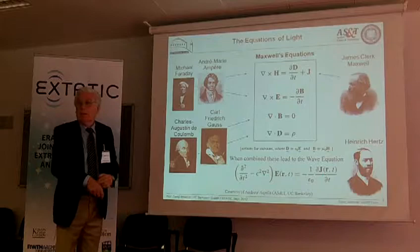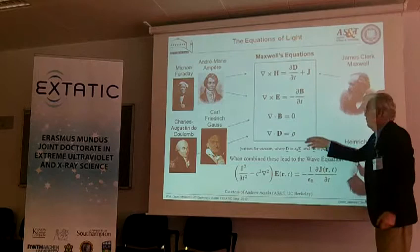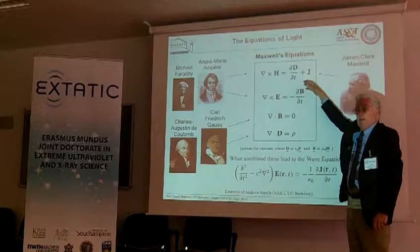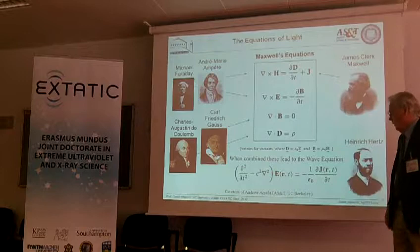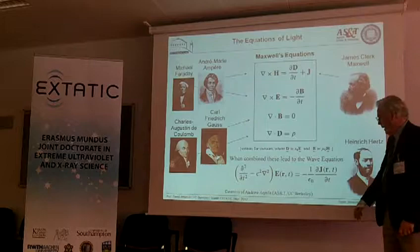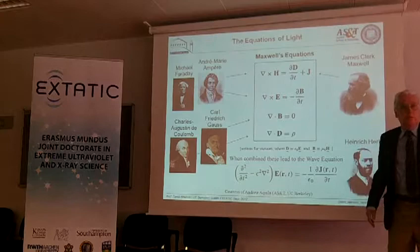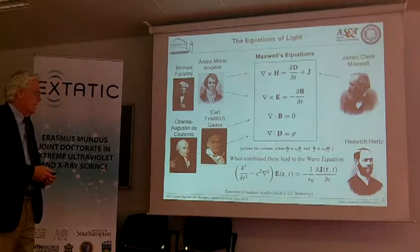It would look more familiar if it were in vacuum with no free charges and no currents. The current density J here has units of amperes per square meter — it's a current density per unit area. For transverse electromagnetic waves, this is the wave equation. If there were no current density and you were in vacuum, this term would be zero, giving the wave equation in vacuum.